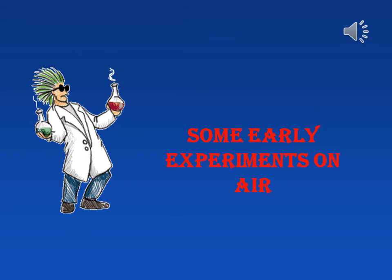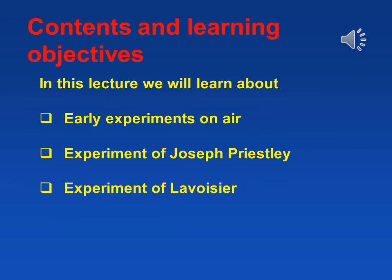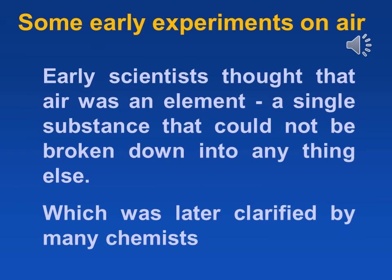Dear students, now we are going to discuss the last topic of today's lecture — some early experiments on air. We will learn about experiments of two well-known scientists: Joseph Priestley and Lavoisier. Early scientists thought that air was an element, a single substance that could not be broken down into anything else, which was later clarified by many chemists.